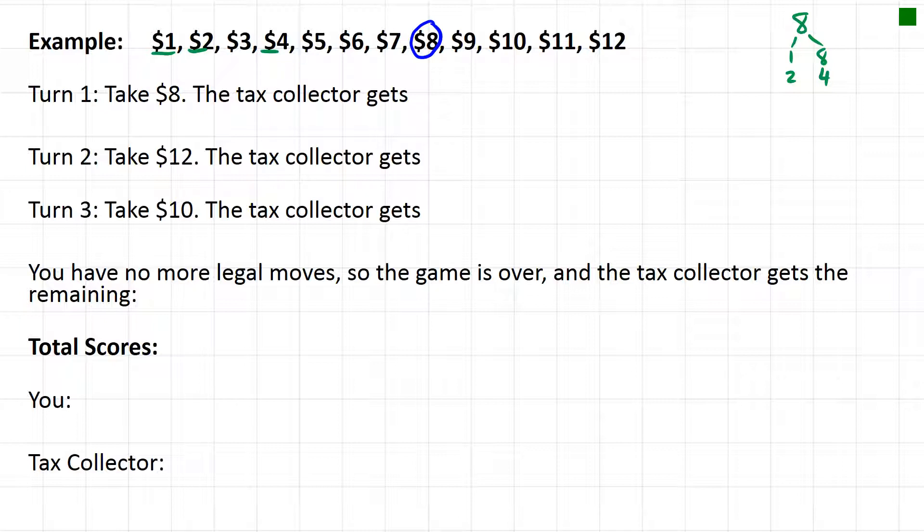Other factors of eight: two and four, because two times four equals eight. So the tax collector gets those two paychecks. And if we think long and hard about other factors, and we can even look at the list, there are no other factors of eight. So we're done. The tax collector collects the $1, $2, and $4 paychecks. So these ones are now all gone from the game.